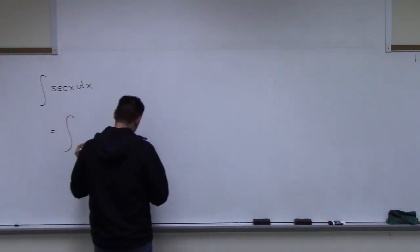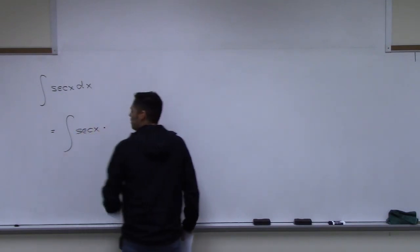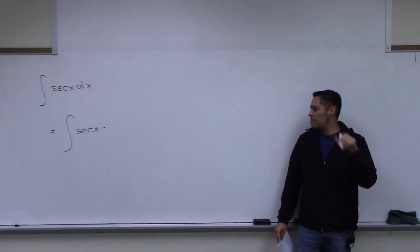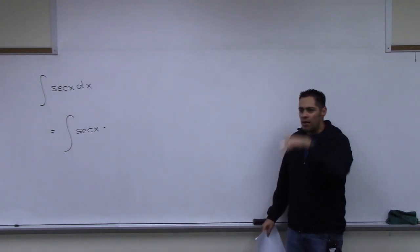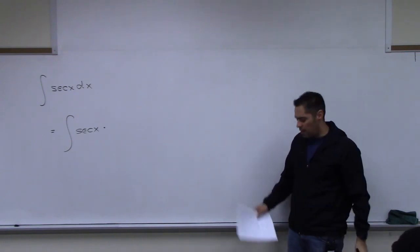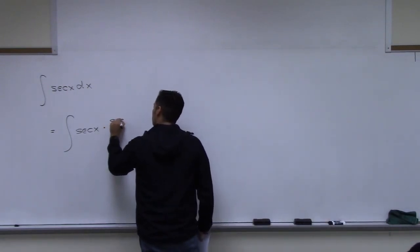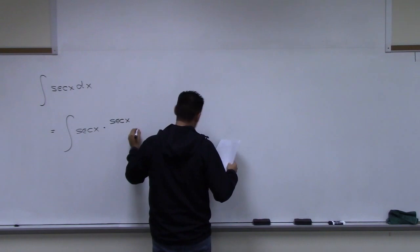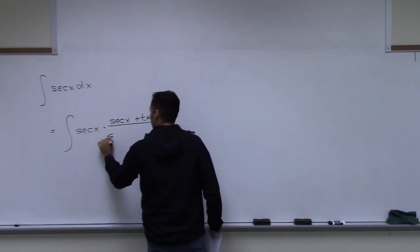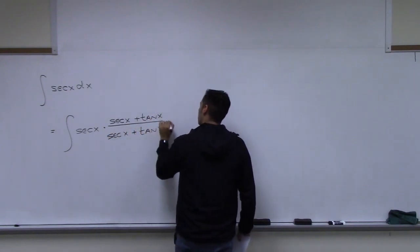The first step is to recognize there's a hidden one. We can put anything over itself — that's a one. So we multiply secant x by (secant x plus tangent x) over (secant x plus tangent x) dx.